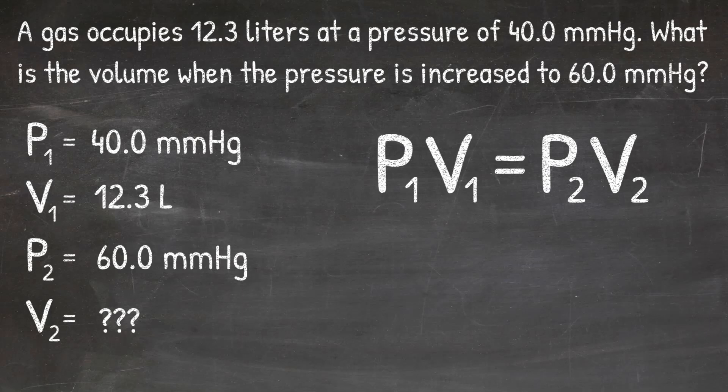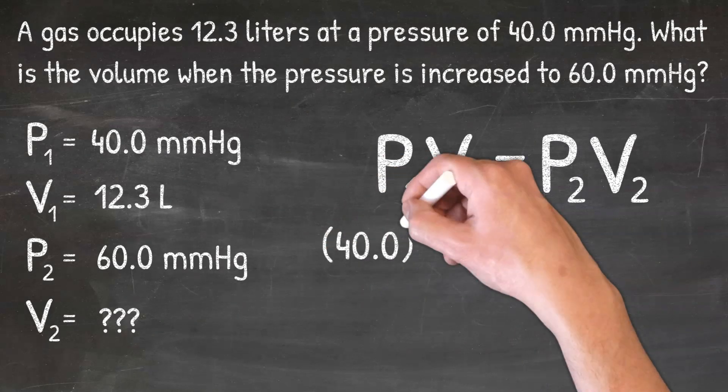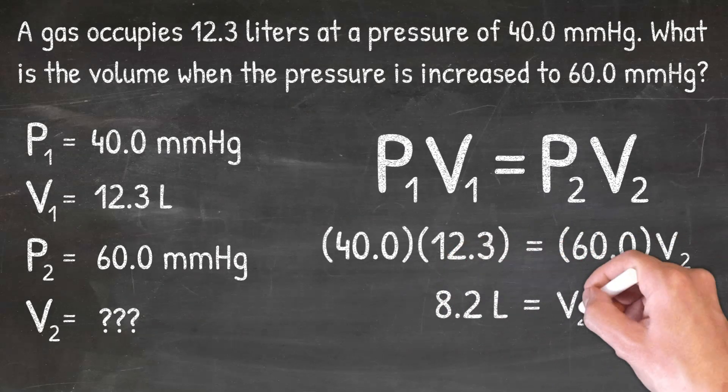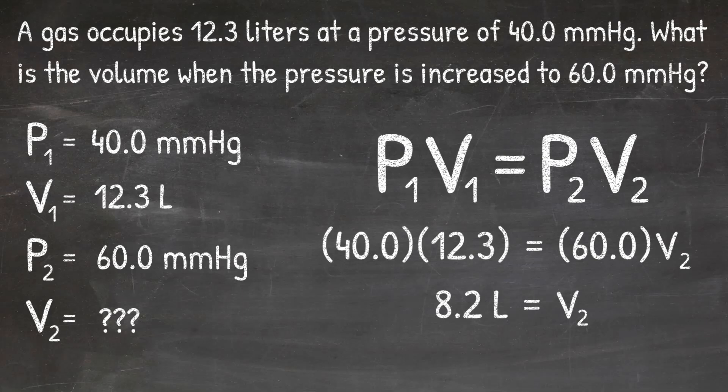Plugging the variables into the equation — 40 for P1, 12.3 for V1, and 60 for P2 — I need to divide 60 over to the other side. In my calculator: 40 times 12.3, divided by 60, gives a V2 of 8.2 liters. This tells us that increasing the pressure from 40 to 60 millimeters of mercury causes the volume to decrease from 12.3 to 8.2 liters, which makes sense because when we increase pressure, Boyle's Law tells us we should expect a decrease in volume.